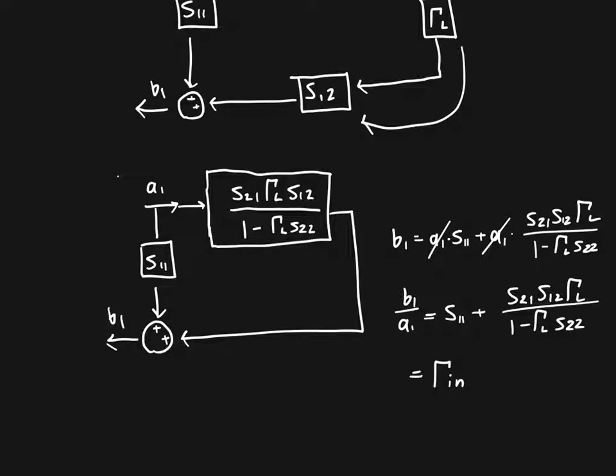So if you had tried to calculate that with S parameters and matrix multiplication, if you had a computer in front of you, it might have been nice and easy. But if you had to do it by hand, it would have been absolutely miserable. And this is a pretty straightforward way to calculate a specific quantity of interest from just signal flow graph or block diagram manipulation.